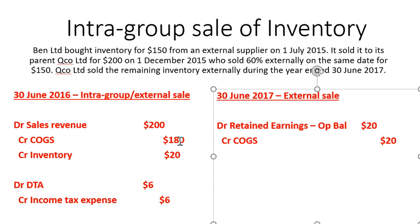We credit COGS by $20 because we've sold that remaining 40% of inventory. Qco was carrying that inventory at $80, but the group expects inventory to be carried at $60. When the inventory was sold, Qco would recognise COGS of $80, but the group only wants to recognise COGS of $60 based on the original cost. So we make that $20 adjustment to bring COGS back from $80 down to $60.